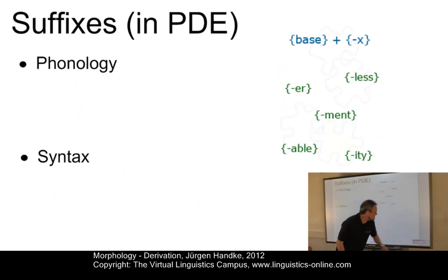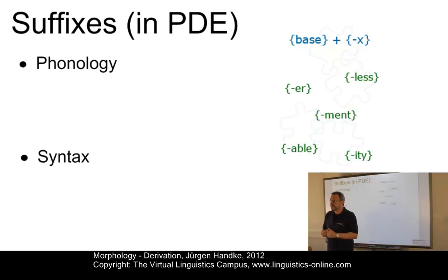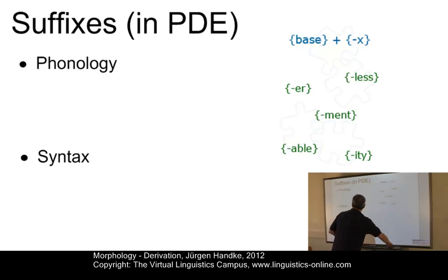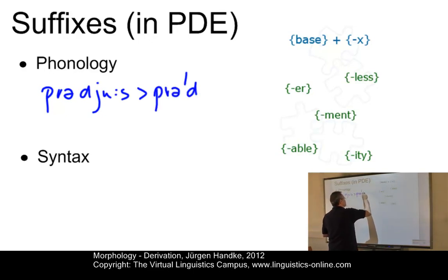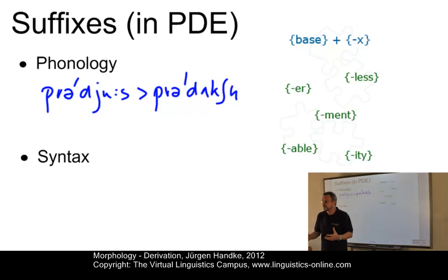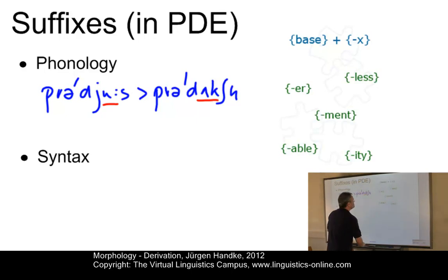Let's look at suffixes. Here the situation is different. The most common means of deriving new words in English makes use of suffixes. In English, derivational suffixes can be subdivided in several ways. On the one hand, we can again look at their phonological behavior. There are suffixes that inflict phonological changes. Look at something like 'produce' versus 'production' — here we have a change, a vocalic plus a consonantal change.